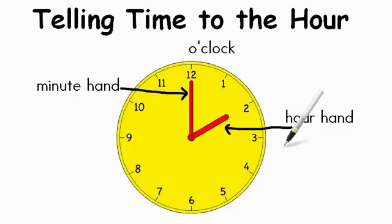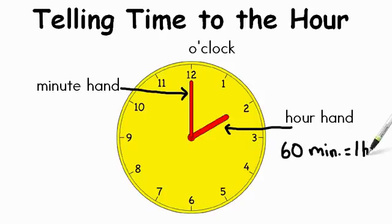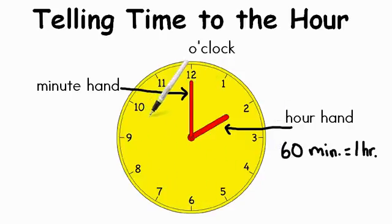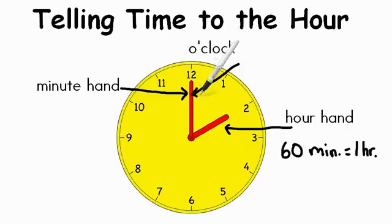The first thing we need to know is that 60 minutes is the same as one hour. Each time the minute hand goes all the way around the clock, 60 minutes have passed, which is the same as one hour. We also need to remember that as the minute hand travels around the clock, 60 minutes pass by.